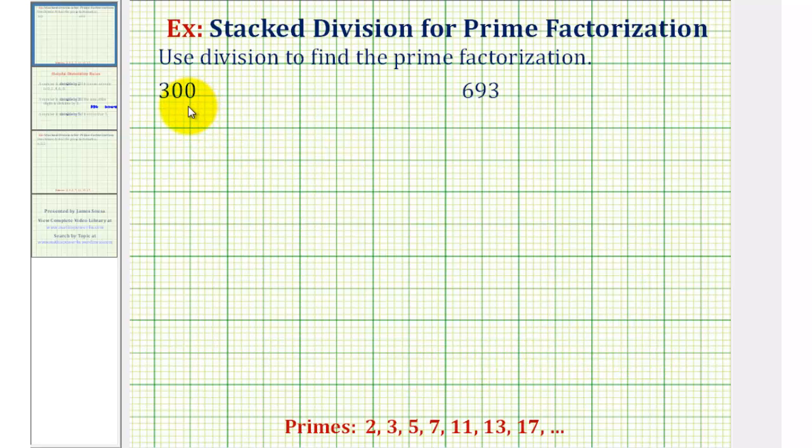So now to find the prime factorization of 300 using stack division, I've seen this shown two ways. We can start at the top and work our way down, or start at the bottom and work our way up. Let's start at the bottom. So we're going to start with 300 and work our way through the primes, determining which primes divide into our dividend. Well, 300 is even, so 300 is divisible by two. So we'll start by dividing by two.